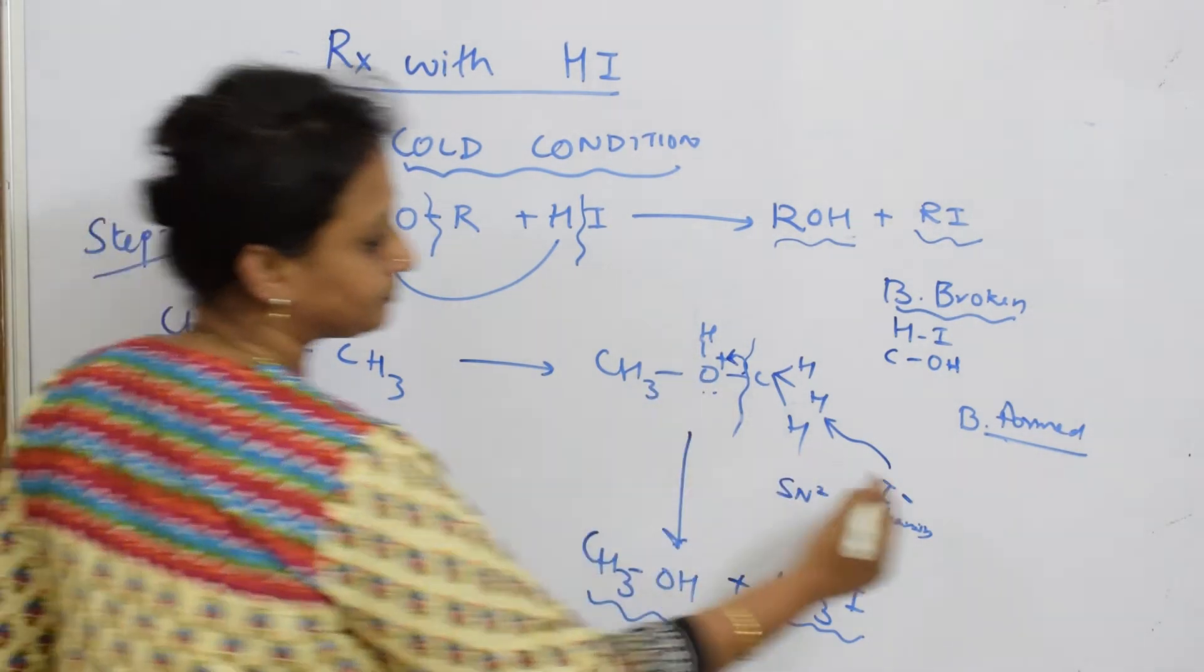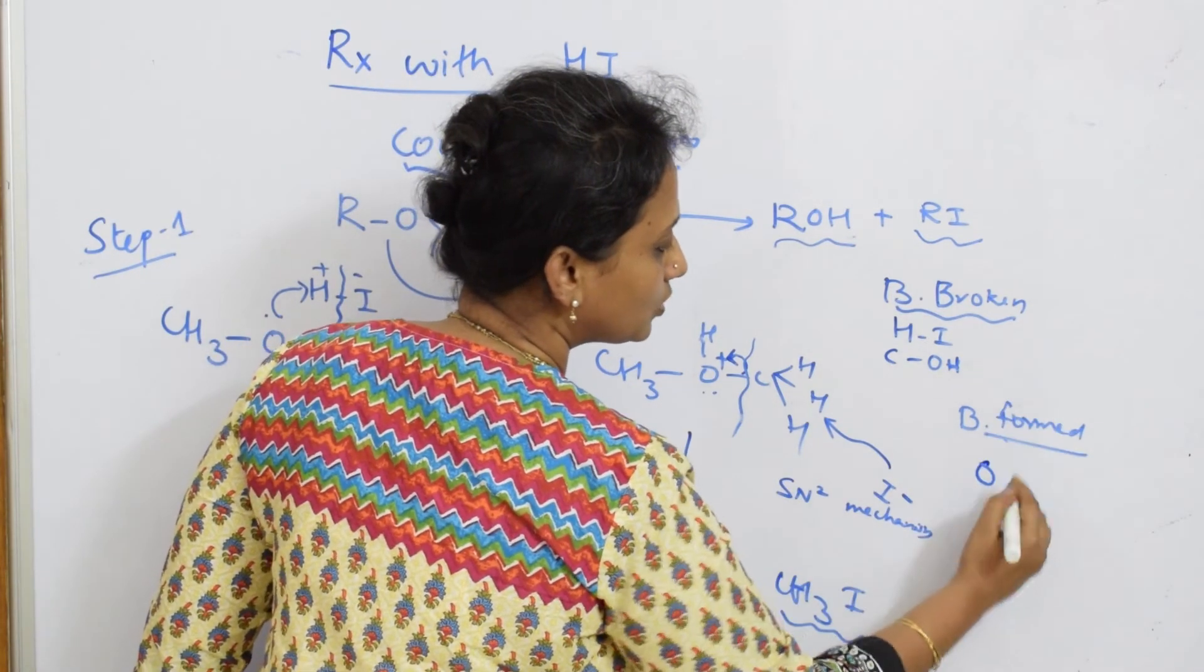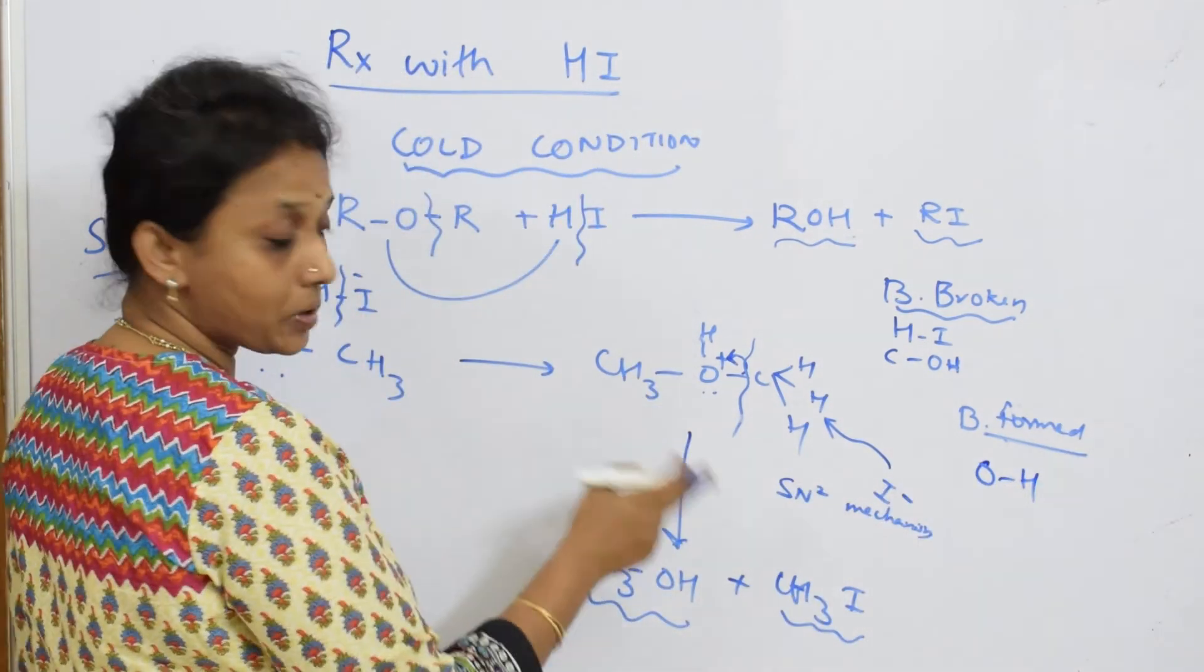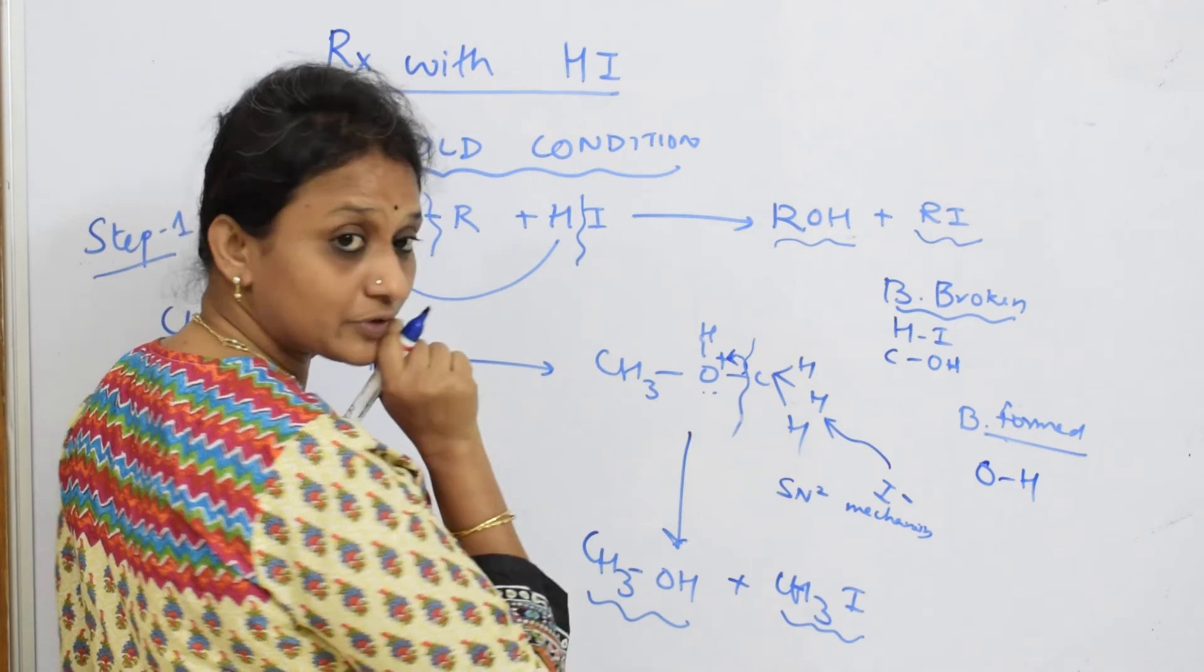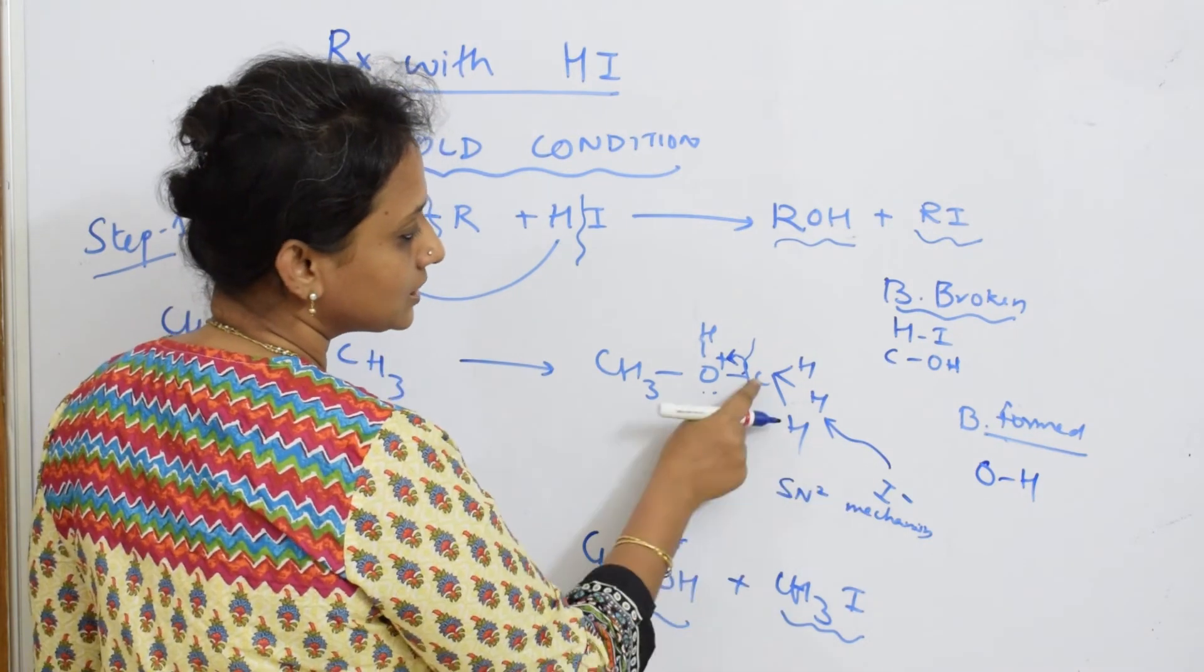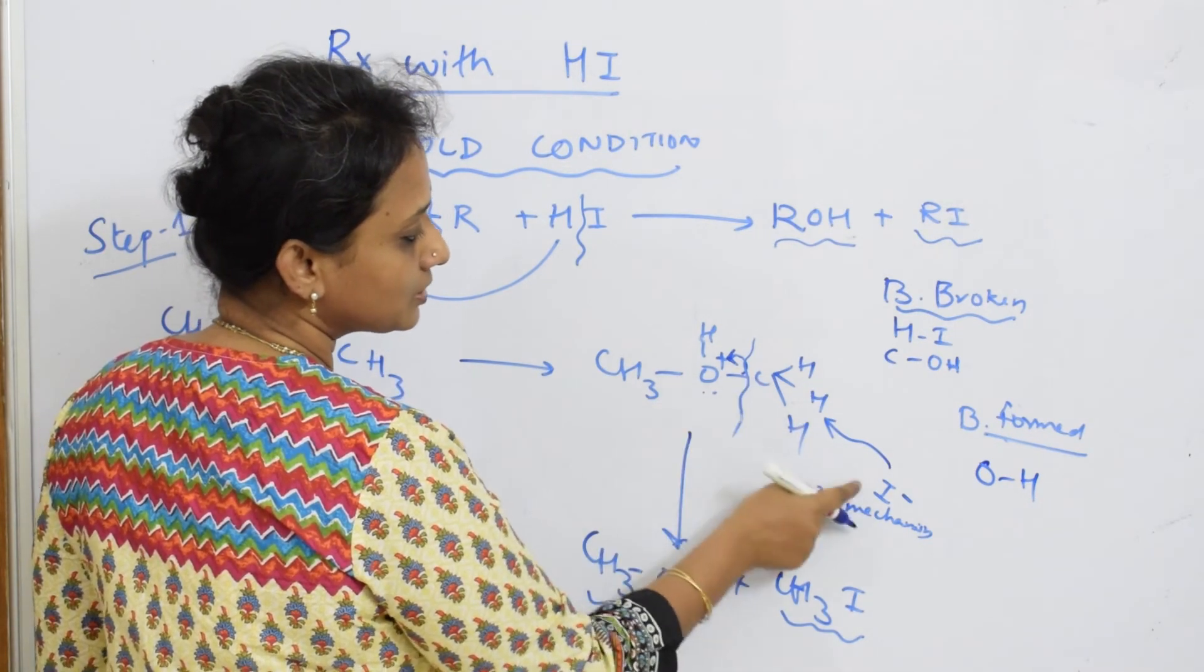Bonds formed: O and H, correct. Now further, what bond has formed here? New bond: this is broken, this is formed—C and I.